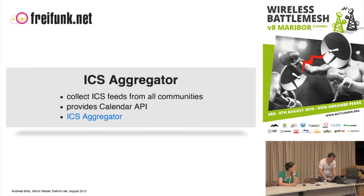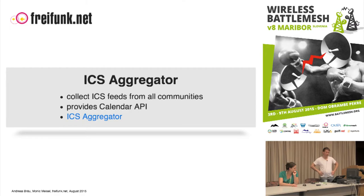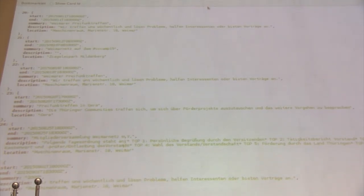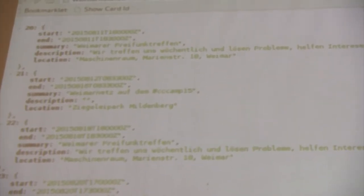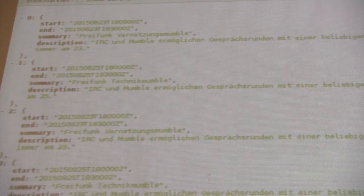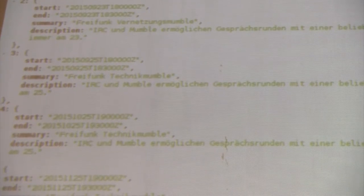You can mix different communities, get events of all communities, or get events of just certain communities. The calendar API returns results in two formats: ICS to import into another calendar, or JSON with all events. In this example I mix Weimar Nets and Hamburg — two communities that provide calendar feeds. There are also two other parameters, 'from' and 'to', so you can query a date range for events.